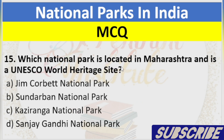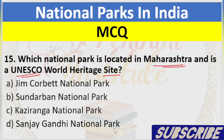Question 15: Which National Park is located in Maharashtra and is a UNESCO World Heritage Site? A. Jim Corbett National Park, B. Sundarbans National Park, C. Kaziranga National Park, D. Sanjay Gandhi National Park. Answer: D. Sanjay Gandhi National Park.